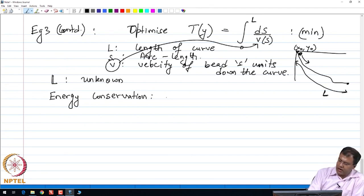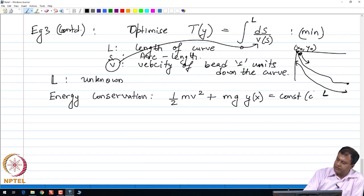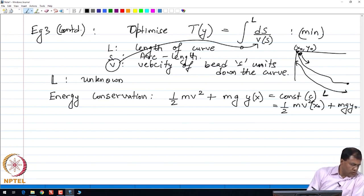The energy conservation argument states that the total energy of this system, in this case, the sum of the kinetic energy plus the potential energy, is a constant of the problem. Let me denote it by C, and let us say this is equal to the value of the energy at the initial point.